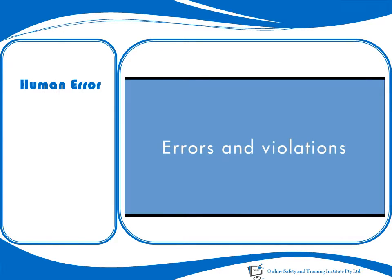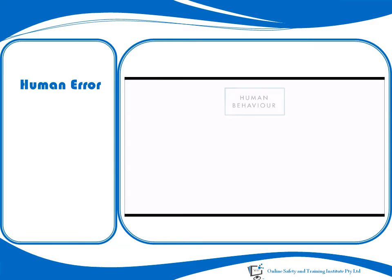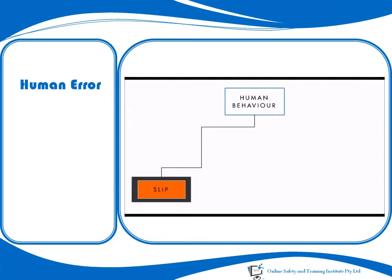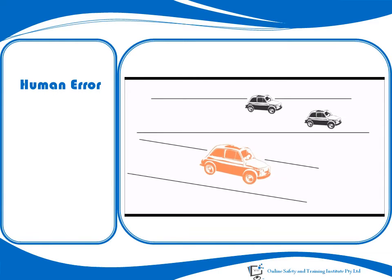We've looked at how people can do things well; now we will look at how things go wrong. The first type of problem is when we have a good plan of action but we make a mess of it — we call this a slip. Slips are the result of skilled automatic processing without paying sufficient attention, like taking an exit too early on a highway. You may be distracted, and suddenly you see an exit you expected and take it, but it was the next one you wanted.